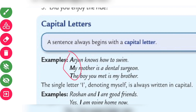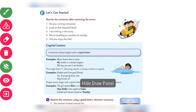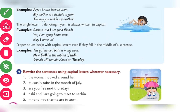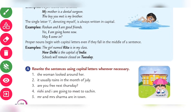The single letter I, denoting myself, is always written in a capital letter. Russian and I are good friends. Yes, I'm going home now. Proper nouns begin with a capital letter even if they fall in the middle of a sentence. The girl named Rita is in my class. New Delhi is the capital of India. School will remain closed on Tuesday. These proper nouns are always given in capital letters.